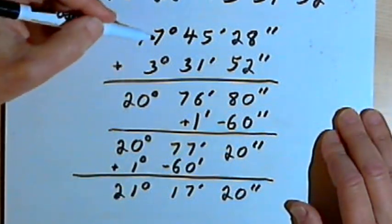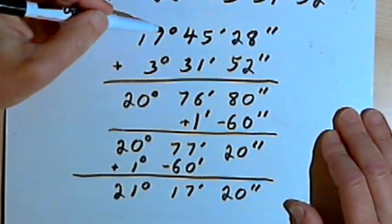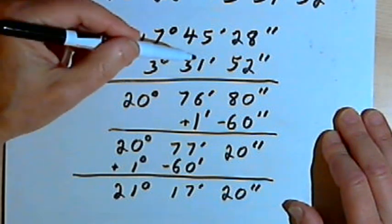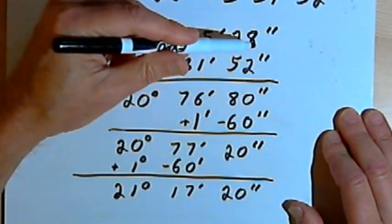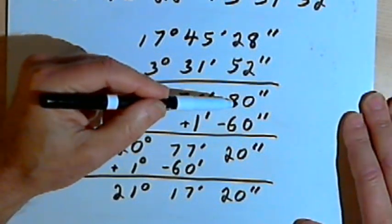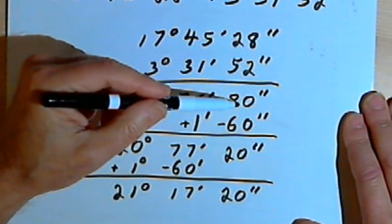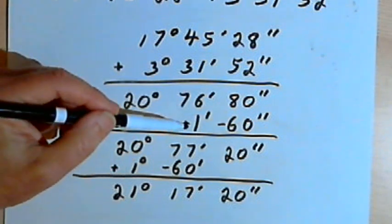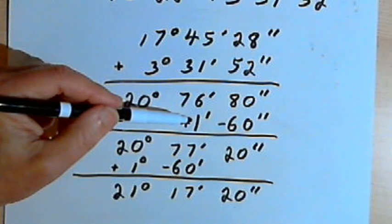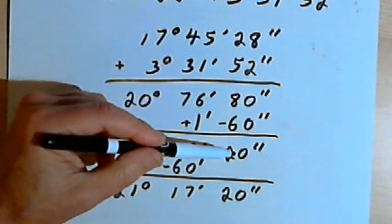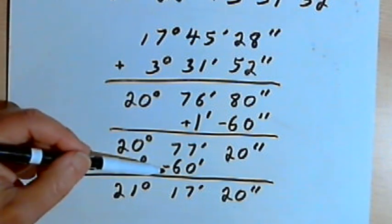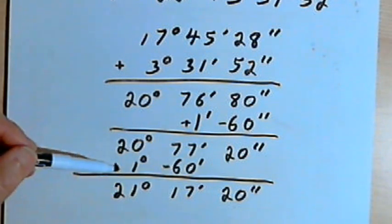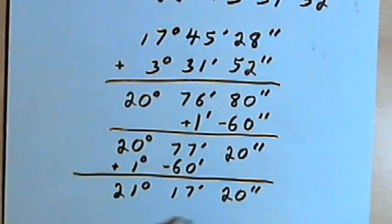To recap: I lined the two angles up with degrees, minutes, and seconds above each other and added each unit separately. The seconds summed to 80 — more than one minute — so I subtracted 60 seconds and added one minute to the minutes column, leaving 20 seconds. Then 77 minutes exceeded one degree, so I subtracted 60 minutes and added one degree to the degrees column, giving the final answer.